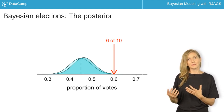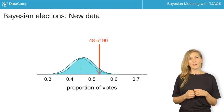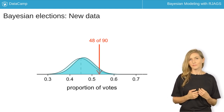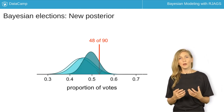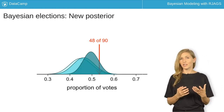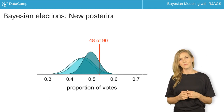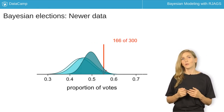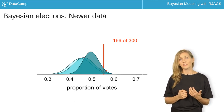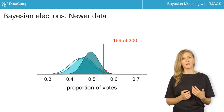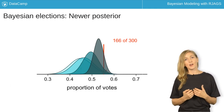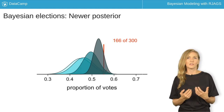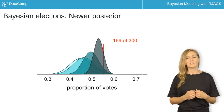You continue to collect data. In a new poll, 48 of 90 polled voters, or 53%, plan to vote for you. In light of these new data, the posterior optimism about your election chances inches up once again. In a final poll, 166 of 300, or 55% of polled voters, support you. Compelled by the information in such a large sample, your posterior optimism about receiving more than 50% of the votes, hence winning the election, is very high.